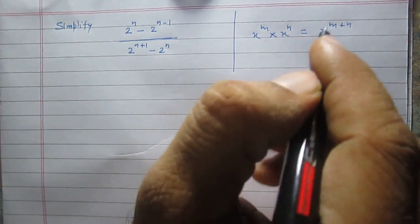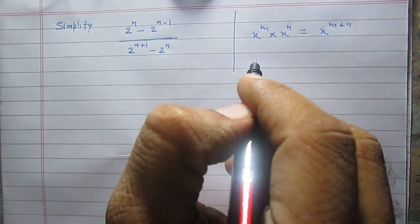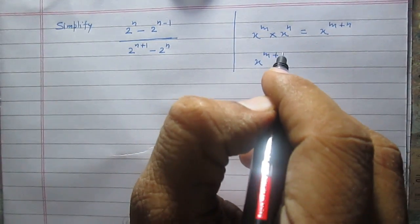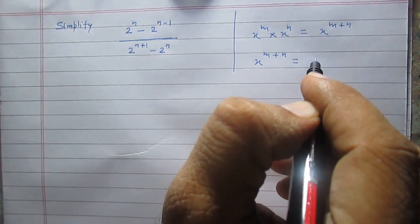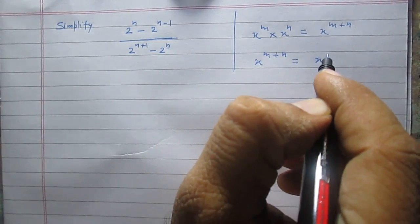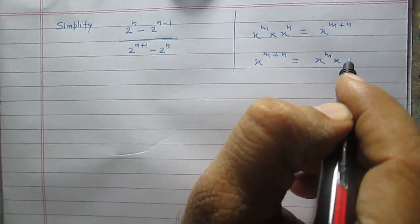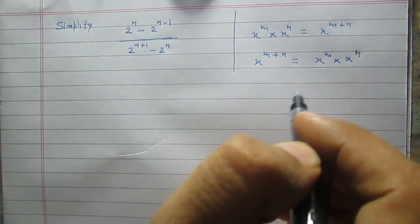We can use this law in reverse order. We can write x raised to the power m plus n as x raised to the power m multiplied by x raised to the power n.